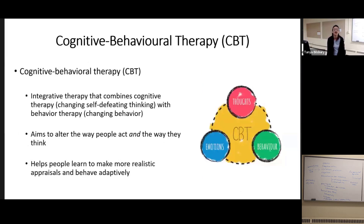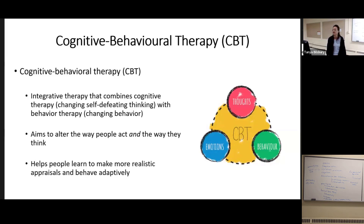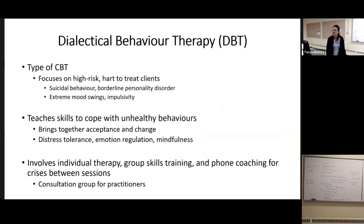Cognitive and behavioral therapies can be combined in ways that address people's thoughts and their behaviors. CBT is an integrative therapy that combines cognitive therapy — about changing self-defeating thinking — with behavior therapy, which is about changing people's actions, trying to make more realistic appraisals and act more adaptively. There is a type of CBT called DBT, Dialectical Behavior Therapy, and this is more appropriate for high-risk, hard-to-treat clients.